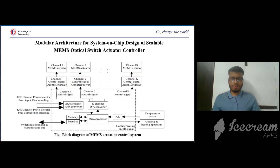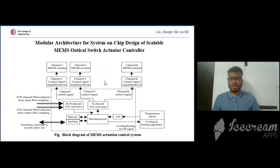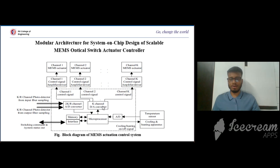The block diagram for the MEMS actuation control system shows various channels and MEMS actuators, with control signals going through driver circuits below the actuator circuits. There are also A2D and D2A converters — analog-to-digital and digital-to-analog converters — connected to the microprocessor, which is further connected to memory and interfaces. Analog-to-digital converters are also connected to temperature sensors and cooling and heating apparatus.